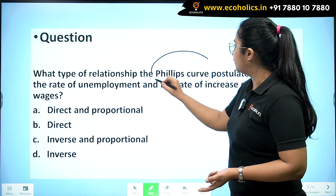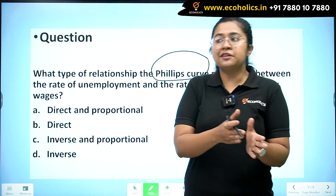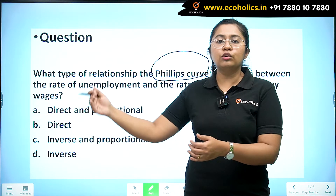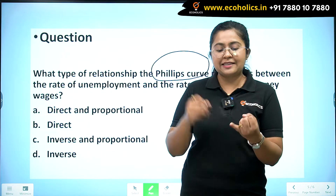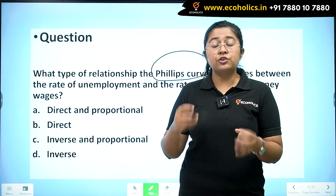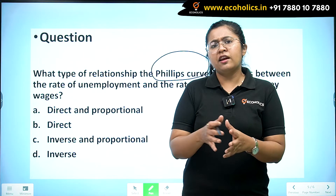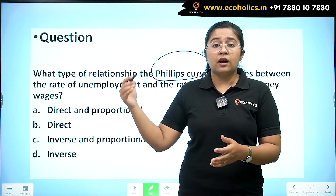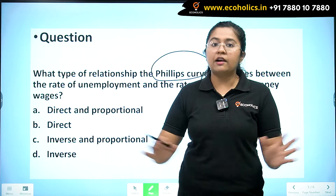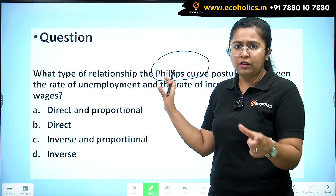The Phillips curve is a very important concept because through it you also encounter various other concepts like stagflation, the natural rate of unemployment, and NAIRU. There are various concepts that stem from it, including different economists' versions of the Phillips curve — a whole line of concepts introduced through just this one small term.